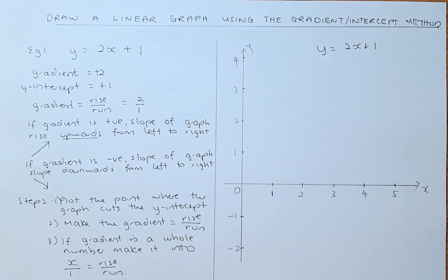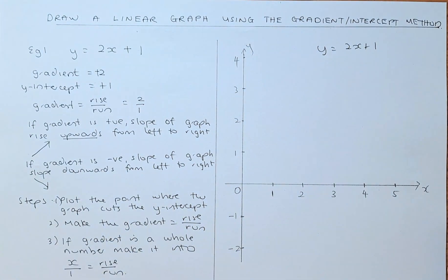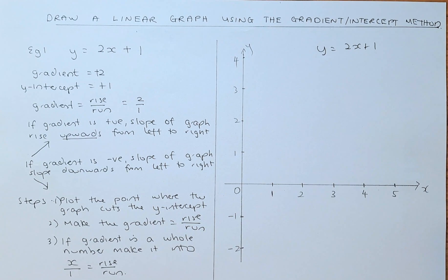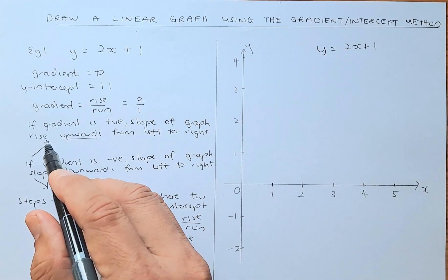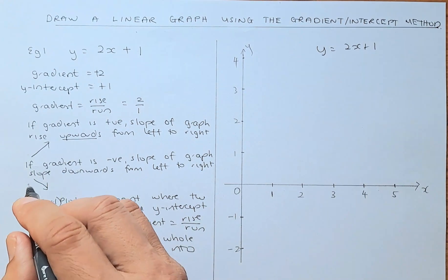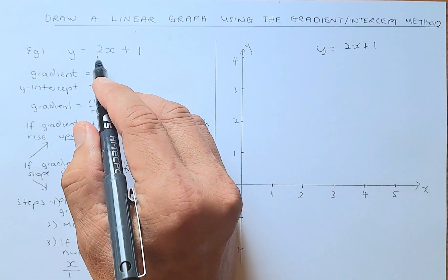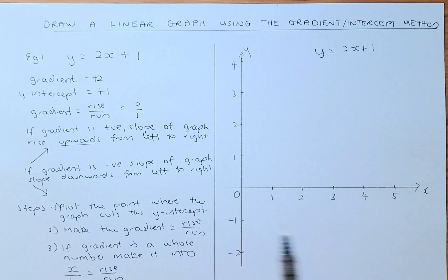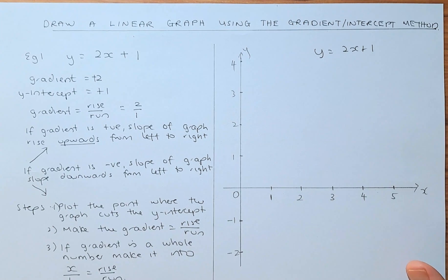The y-intercept is where the graph cuts the y-axis. You also need to know whether the gradient is positive or negative. If the gradient is positive, the graph goes upwards. If the gradient is negative, it goes downwards. In our case the gradient is positive 2, so the graph is going to go up.